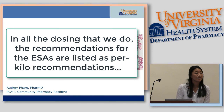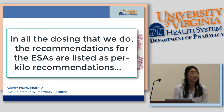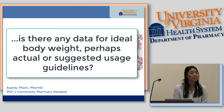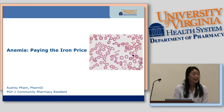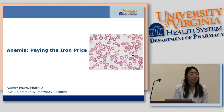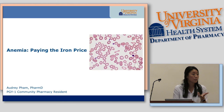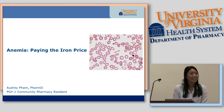Audience question: all of the ESA dosing recommendations are per kilogram — is there any data on ideal body weight versus actual body weight, especially in heavier patients? Response: I didn't look specifically into ideal body weight, but there isn't really an FDA label for a maximum dose. In some studies where ESAs were used targeting higher hemoglobin levels, those ESA doses were almost double, so you should really think about overutilization of ESAs and the costs associated with that. As for ideal body weight specifically, that wasn't something I looked into.